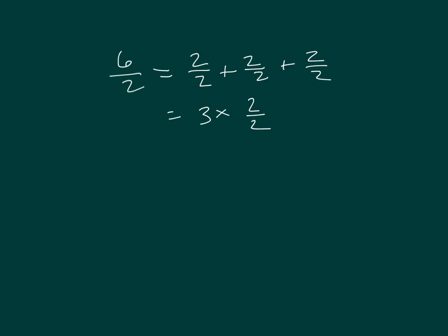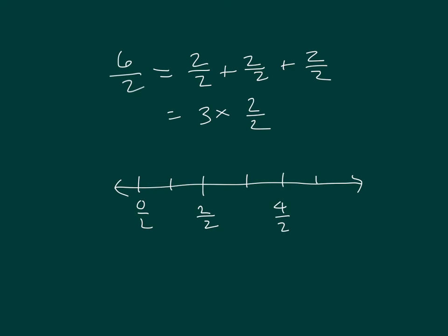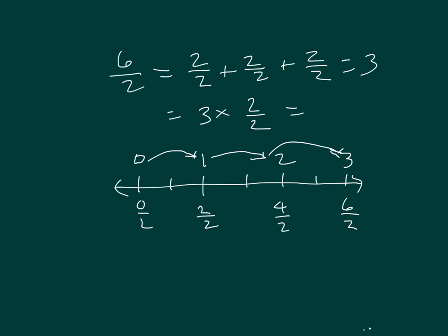So let's draw a number line for that. This time we'll draw a number line where we start off at 0 halves. And then we have 1 half, 2 halves, 4 halves, 6 halves. 0 halves is equal to 0, 2 halves is equal to 1, 4 halves is equal to 2, and 6 halves is equal to 3. And then we'll draw our arrows: 2 halves, plus another 2 halves, plus another 2 halves. So this equals 3. 3 times 2 halves does equal 3.